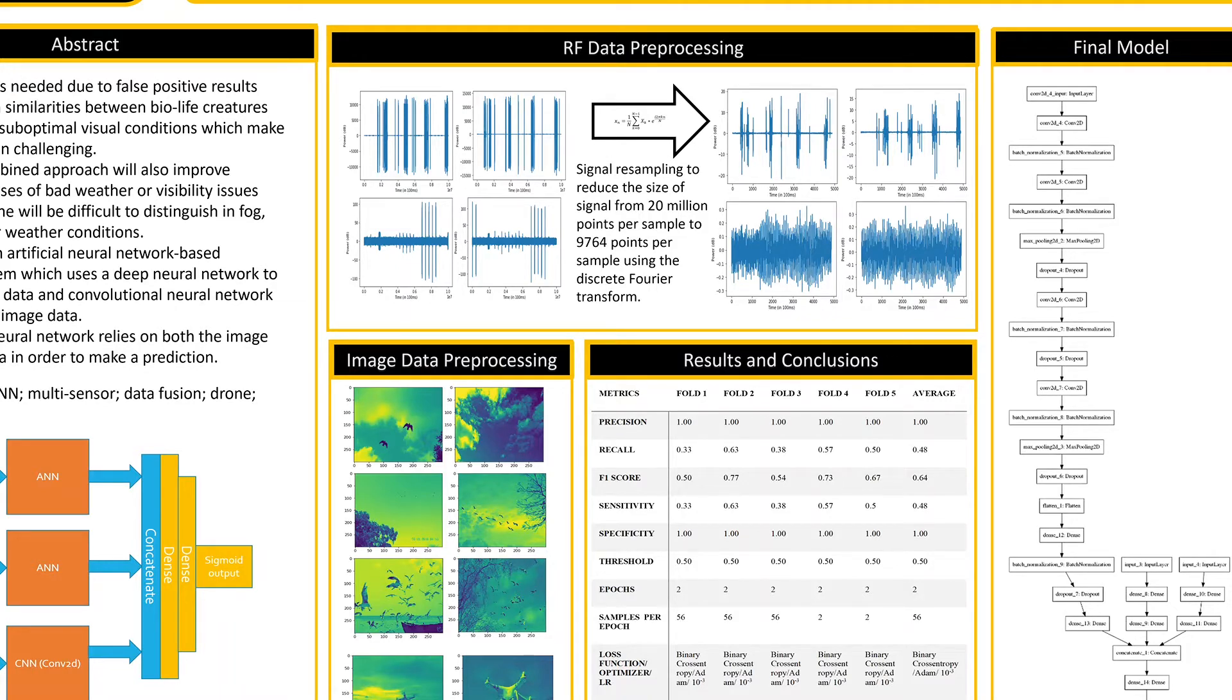Essentially we go from 20 million points to about 10,000, and that essentially just keeps the features as it should be. As you can see here, these are the raw RF signals from a drone, and then this is the preprocessed one, and this is the background and our resampled one.